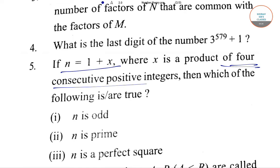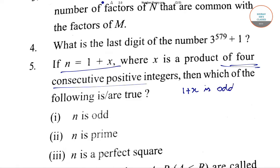Since x is a product of 4 consecutive positive integers, it is always divisible by 4. So 1 plus x is always odd. As x is always divisible by 4, x has to be even. Therefore 1 plus x is always odd. So x being a product of 4 consecutive positive integers means x is divisible by 4, which implies x is an even number, so 1 plus x will be odd.